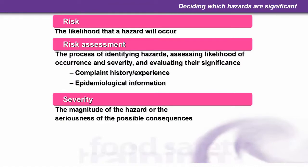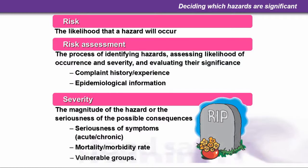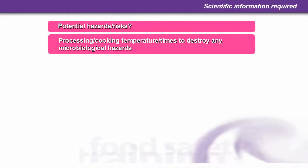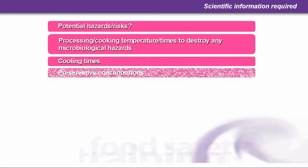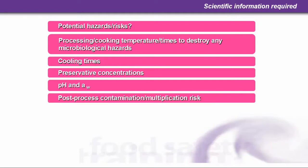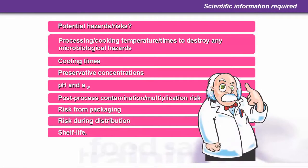Severity refers to the magnitude of the hazard or the seriousness of the possible consequences. You need to look at the seriousness of symptoms — whether they're acute or chronic, the mortality and morbidity rate, and vulnerable groups that might be affected. For scientific information, consider potential hazards, processing cooking temperatures, times to destroy microbiological hazards, cooling times, preservative concentrations, pH and AW (acidity, alkalinity, and water concentration), post-process contamination, multiplication risk, risk from packaging, risk during distribution, and the shelf life of the product.